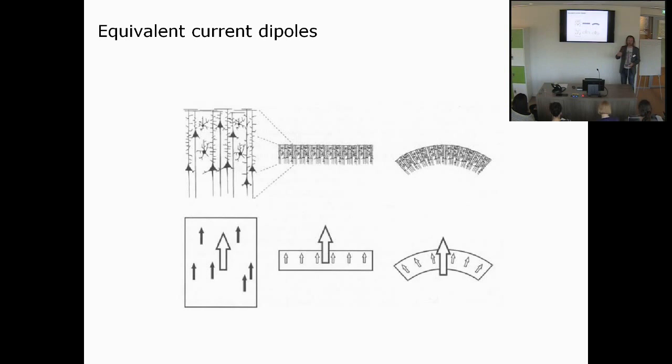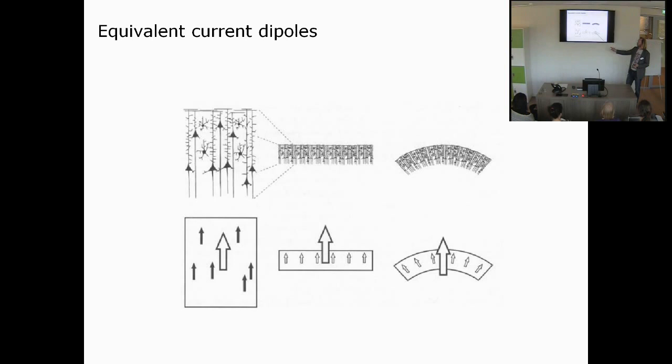There are cases where the model starts failing — for example, with a folded piece of cortex. If we describe activity along a folded cortex with a single equivalent current dipole, the location of that dipole will describe the center of mass of all the activity, which might mean it is displaced relative to the curved surface.